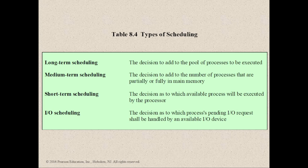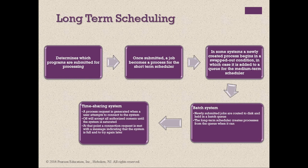Before exploring scheduling types, we introduce the concept of a process — a term first used by designers of the Multics OS in the 1960s. It is a more general term than job. Common definitions include: a program in execution, the animated spirit of a program, or the entity to which a processor is assigned. For scheduling types, long-term scheduling is first: the long-term scheduler determines which programs are admitted to the system for processing, controlling the degree of multi-programming. Once admitted, a job becomes a process added to the queue for the short-term scheduler.